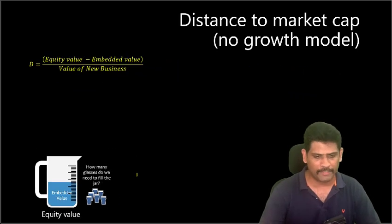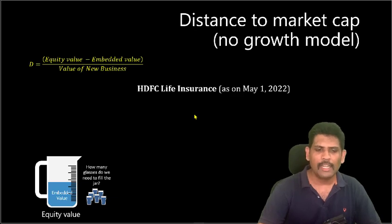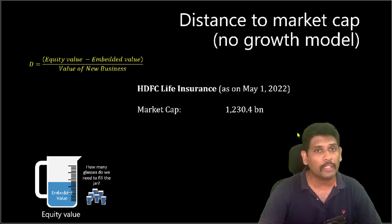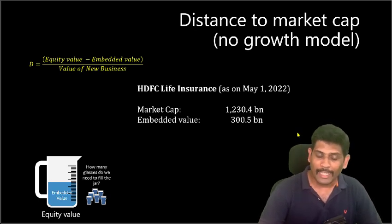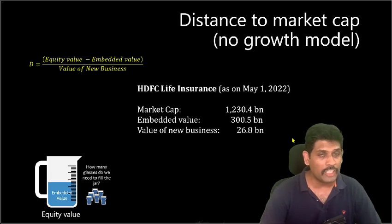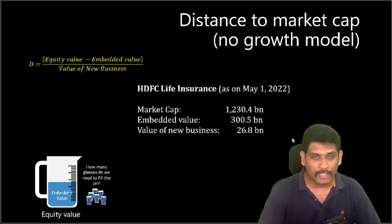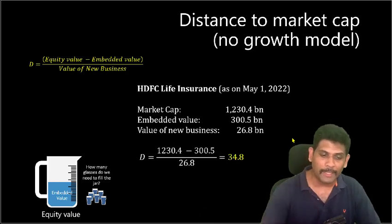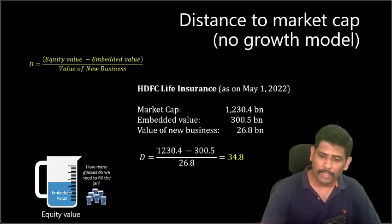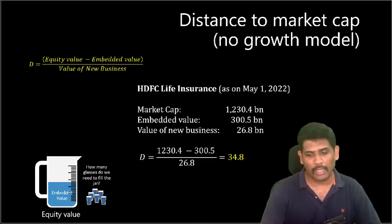Let's understand how this is applied in real life, taking the case of HDFC Life. As on May 1, 2022, HDFC Life had a market cap of 1,230 billion rupees and its embedded value was 300.5 billion rupees. So the gap we are talking about is around 930 billion rupees. The value of new business they generated during FY22 was 26.8 billion rupees. So the distance to market cap is 1,230 minus 300 divided by 26.8, which is roughly 35 years.